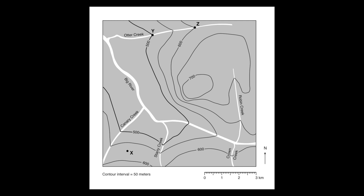In my last video, we took a look at what exactly topographic maps are, what contour lines are, index contours, contour intervals, map scales, compass rows, and a few other features of topographic maps. If you're still a little bit iffy on the basics, you might want to go back and check out that video before proceeding.